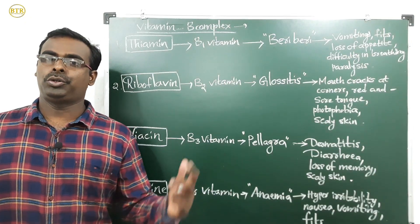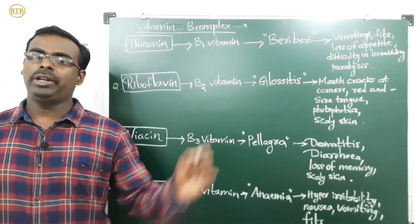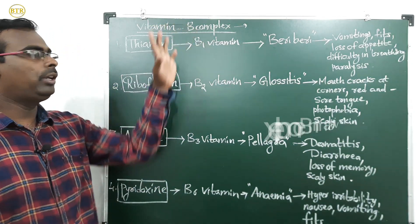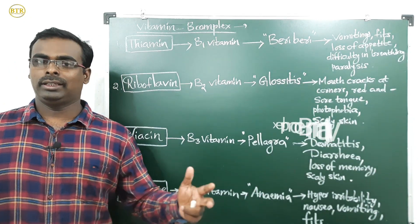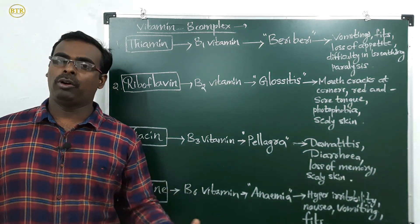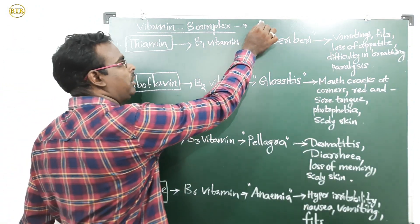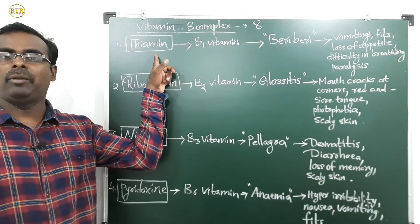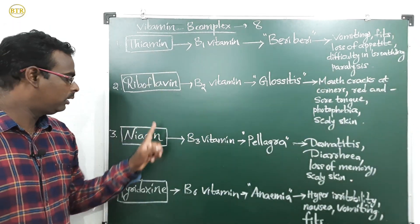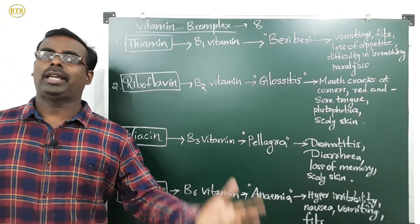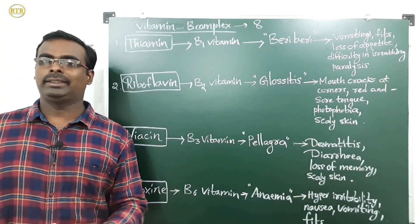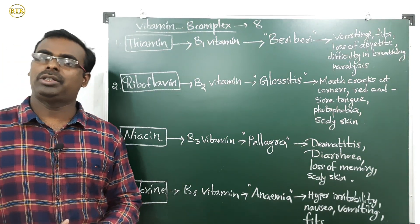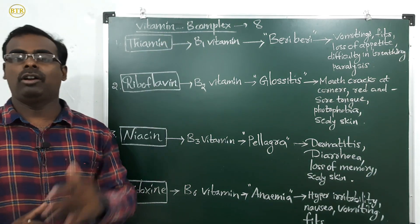Vitamin B complex is not a single vitamin; it is a group of 8 vitamins. They are: thiamine, riboflavin, niacin, pyridoxin, cyanocobalamin, folic acid, pantothenic acid, and biotin.